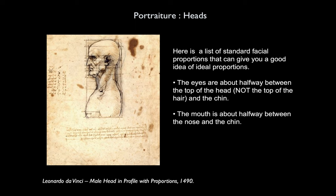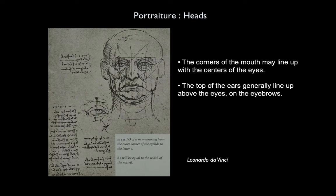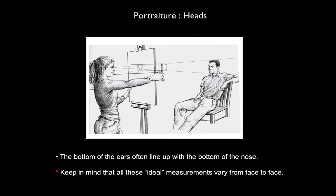Here's a list of standard facial proportions that can give you a good idea of these ideal proportions. The eyes are about halfway between the top of the head — not including the hair — and the chin. The mouth is about halfway between the nose and the chin. The corners of the mouth may line up with the center of the eyes. The top of the ears generally line up above the eyes on the eyebrows, and the bottom of the ears often line up with the bottom of the nose. Keep in mind that these ideal measurements vary from face to face — take much more specific measurements of a particular person's face if you want it to truly look like them. Really observe and make sure you're observing those details.